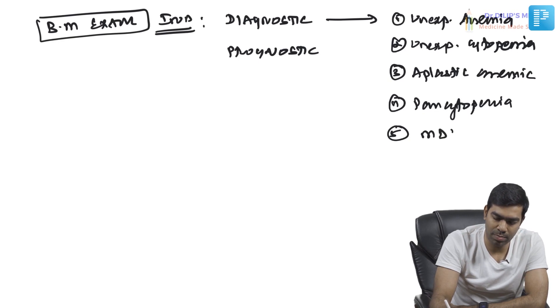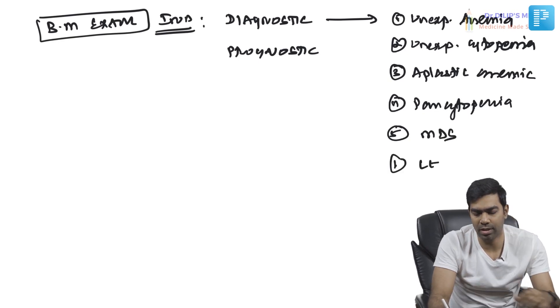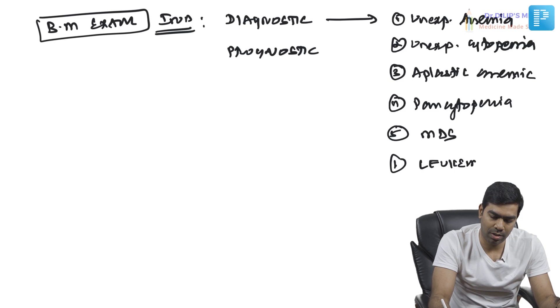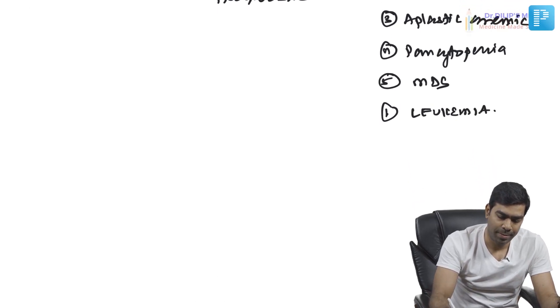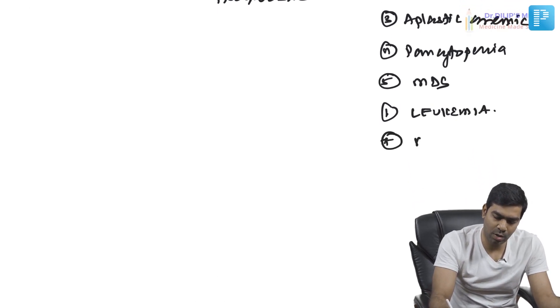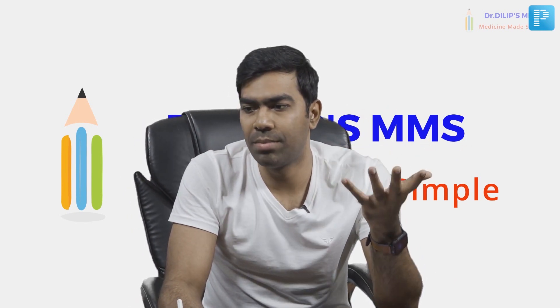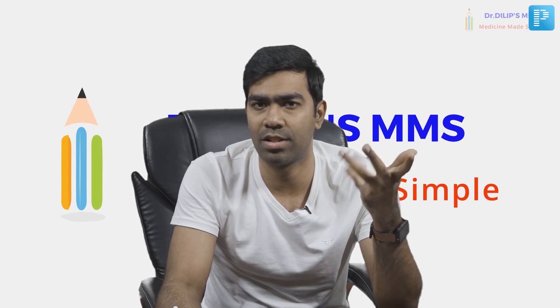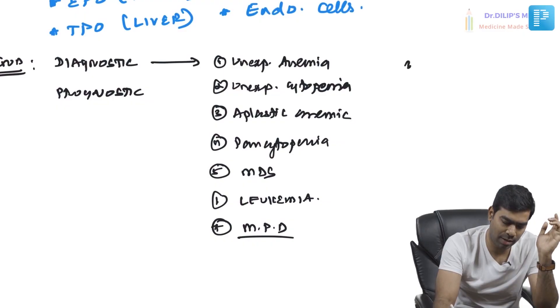If you are suspecting myelodysplastic syndrome, or if you are suspecting leukemias, or if you are suspecting myeloproliferative disorders — many things come under myeloproliferative disorders like CML, essential thrombocythemia, polycythemia vera, primary myelofibrosis — in all these conditions your bone marrow examination is of vital importance.